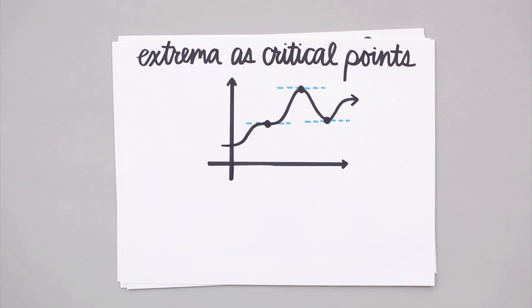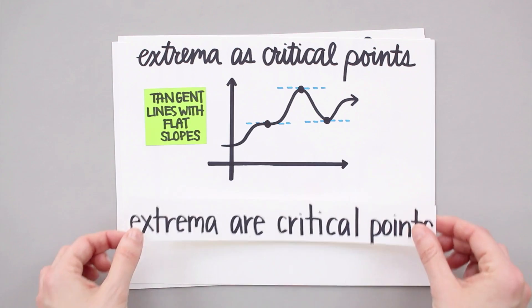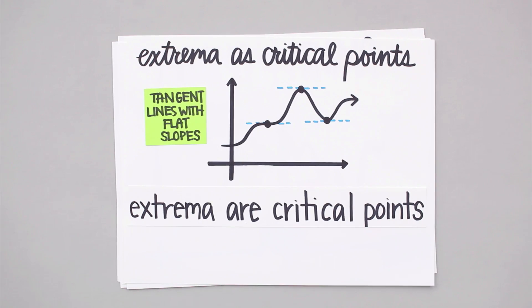So what's the relationship between critical points and these maximum and minimum points that we've been looking at? Well, you may have noticed that at both local and global maximum and minimum points, the slope of the curve was flat. So each of these extrema points, these max and min points, are actually critical points.